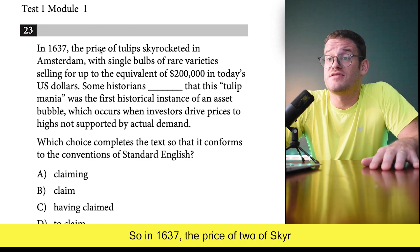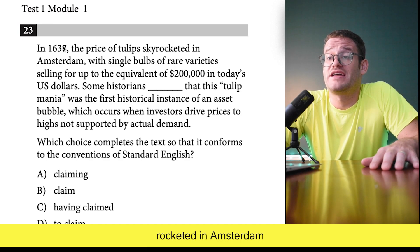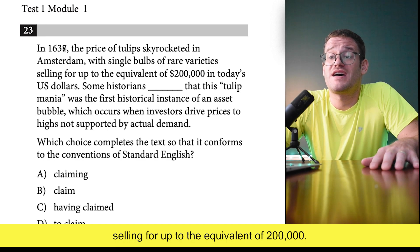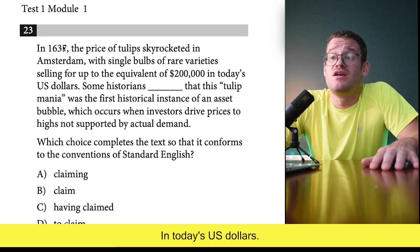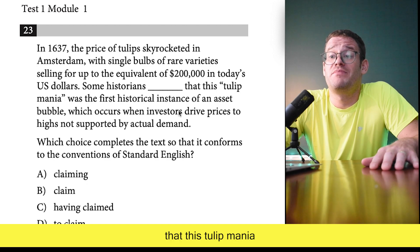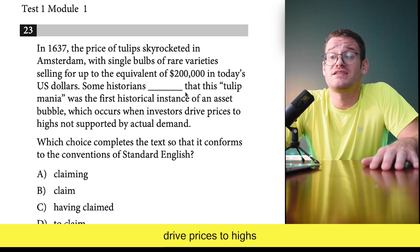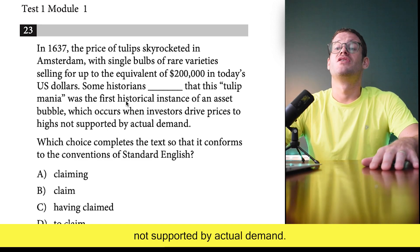In 1637 the price of tulips skyrocketed in Amsterdam, with single bulbs of rare varieties selling for up to the equivalent of $200,000 in today's U.S. dollars. Some historians blank that this tulip mania was the first instance of an asset bubble, which occurs when investors drive prices to highs not supported by actual demand.